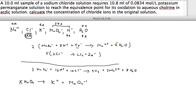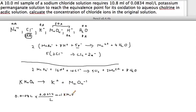We're given 10.8 milliliters of 0.0834 mol per liter of potassium permanganate. We determine the moles of potassium permanganate by multiplying volume by concentration: 0.0108 liters multiplied by 0.0834 mol per liter of potassium permanganate. We then use the mole ratio to convert from potassium permanganate to permanganate ions.